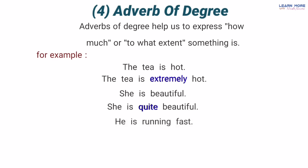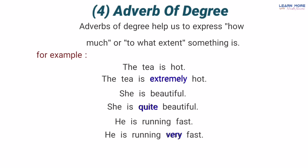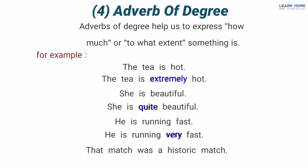Number third sentence: 'He is running fast' — woh tez daur raha hai. Is sentence mein 'he' subject hai, pronoun; 'running' main verb hai jo woh action perform kar raha hai, progressive form mein hai; aur 'fast' yahan par ek adverb hai kyunke yeh us verb 'running' ko modify kar raha hai ke woh kaise daur raha hai — fast. Ab dekhen: 'He is running very fast' — woh bahut tez daur raha hai. Ab jo 'very' hai yeh ek adverb of degree hai kyunke yeh ek aur adverb jo 'fast' hai uski degree mein izafa kar raha hai — pehle tha ke woh tez daur raha hai, ab hai ke woh bahut tez daur raha hai.